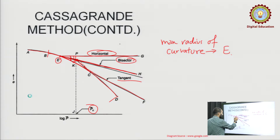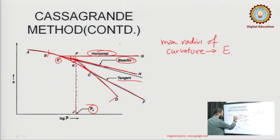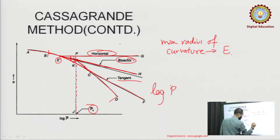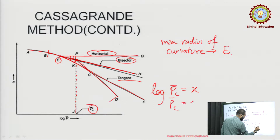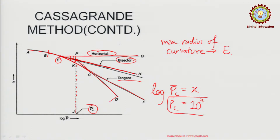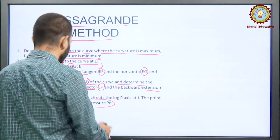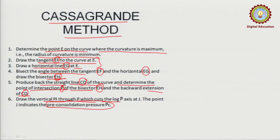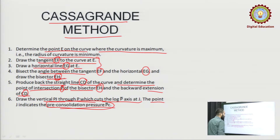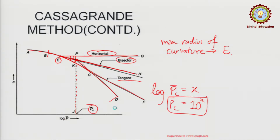Once point P is obtained on the bisector Eh and the backward extension of CD, we draw a vertical through point P down to the x-axis. The point where it meets the x-axis gives us log pc — which equals 10 to the power x — and from this we get the value of pre-consolidation pressure pc.